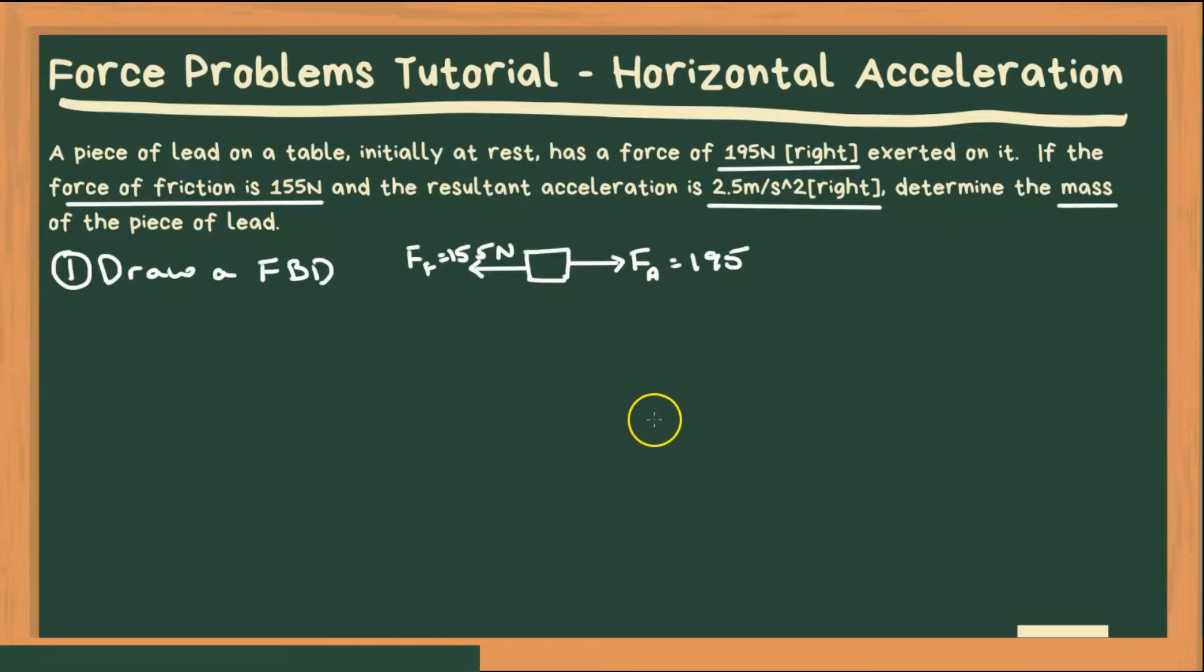Now something I always recommend students include on the free body diagram is just to the side or somewhere to include the direction of acceleration, and then to write a coordinate system just to say which direction they're going to choose as their positive direction, and to always make that direction the same direction as acceleration.